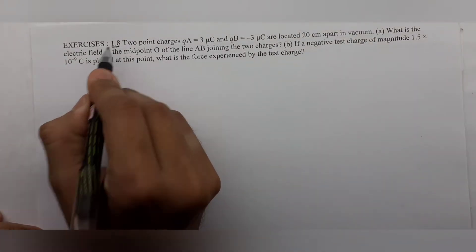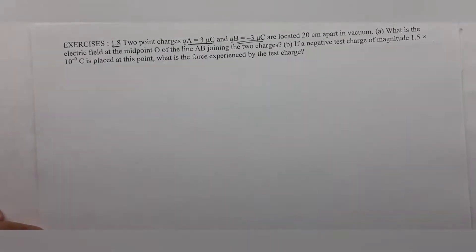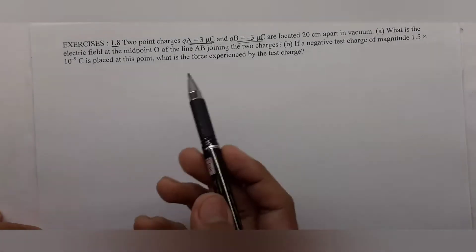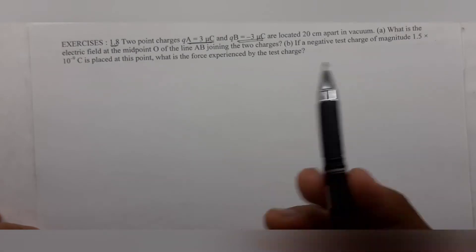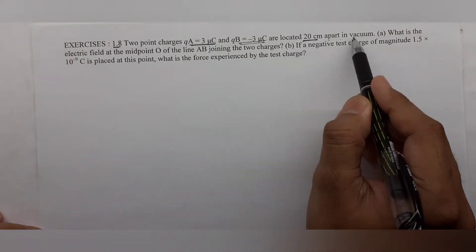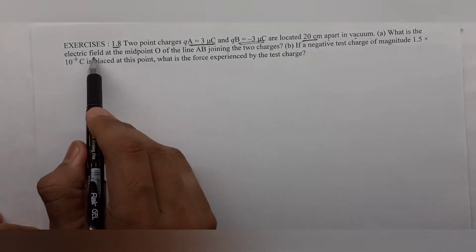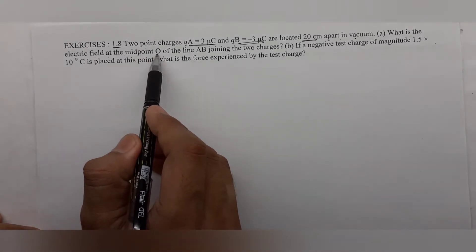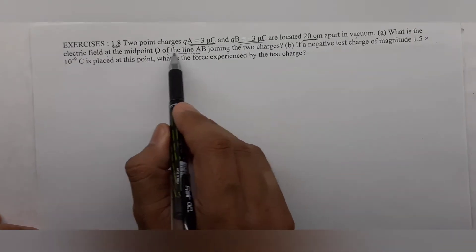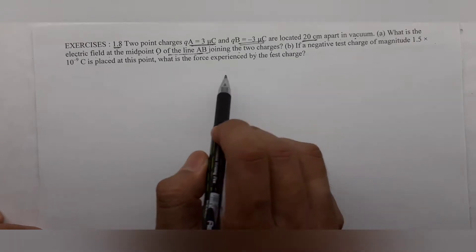Exercise 1.8: Two point charges qa = 3 microcoulomb, qb = minus 3 microcoulomb — these two charges form a dipole — are located 20 centimeters apart in vacuum. Part (a): What is the electric field at the midpoint O of the line joining the two charges A and B?